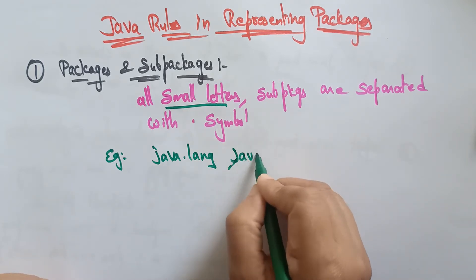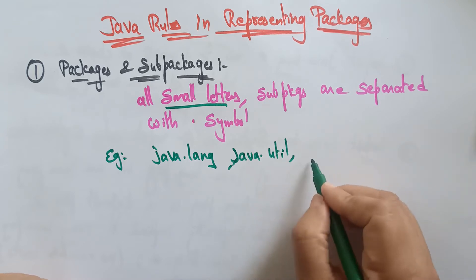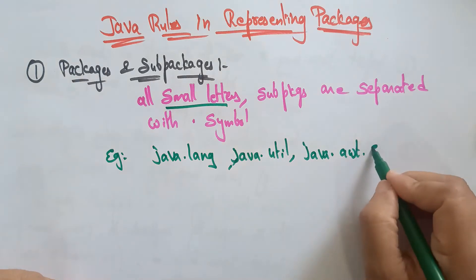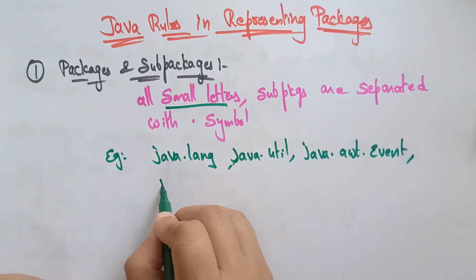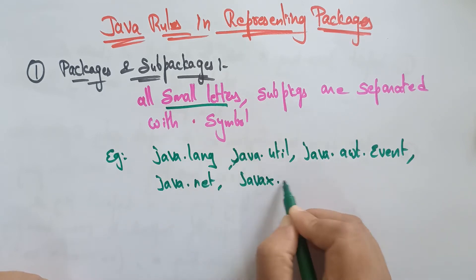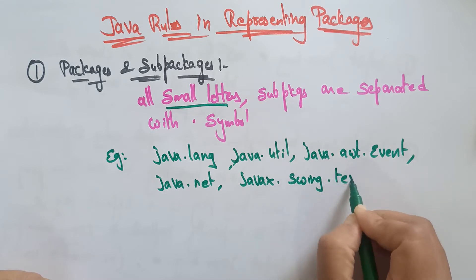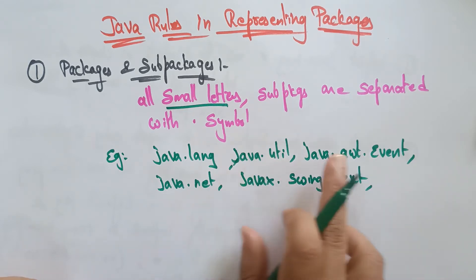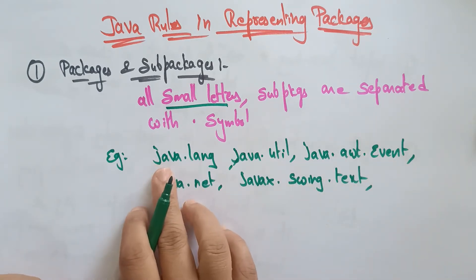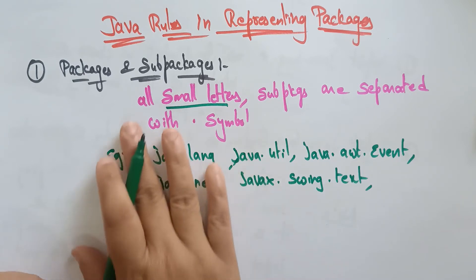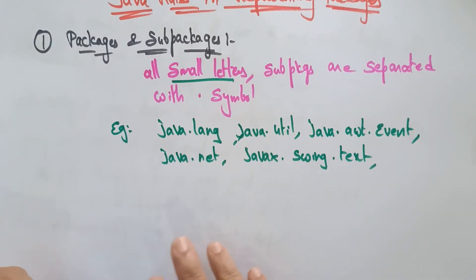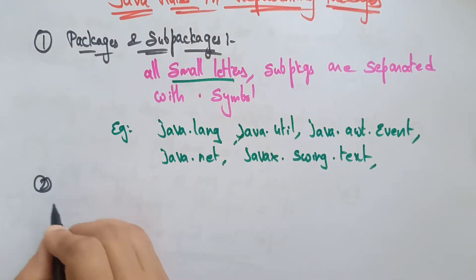For example: java — all small letters. java.awt.event, java.net, javax.swing.text — these are all packages with their sub-packages. Java is a package and awt, event, net, swing, text are sub-packages within it. All letters should be small letters and they are separated with the dot symbol.